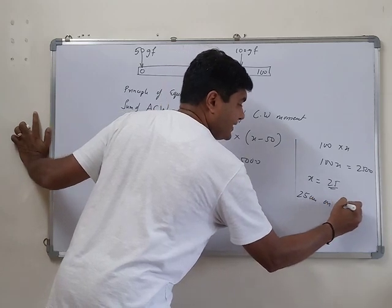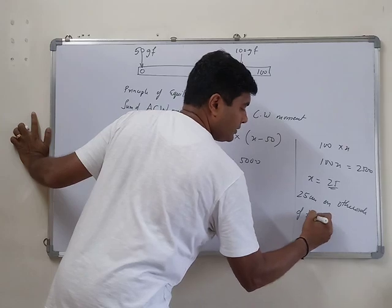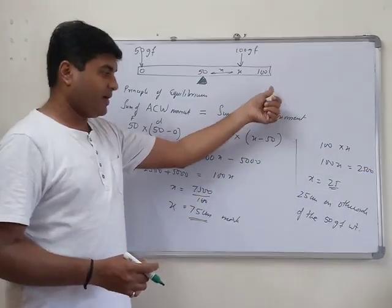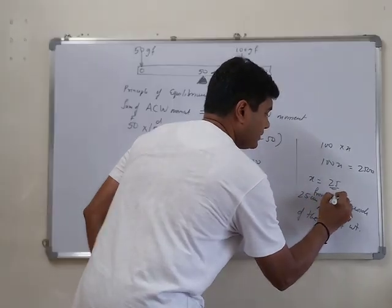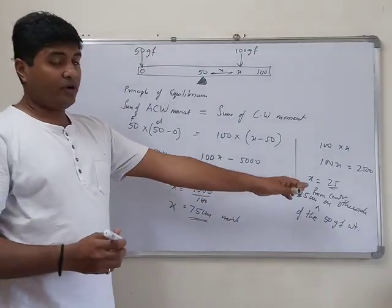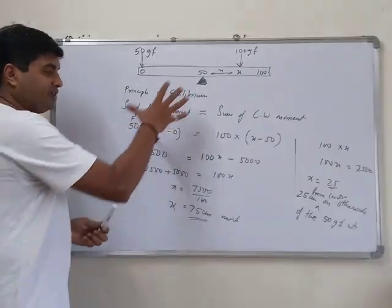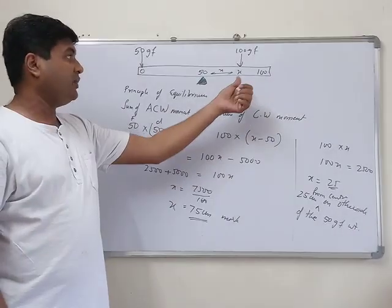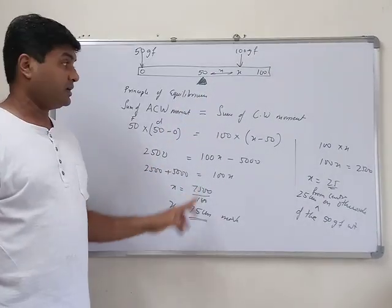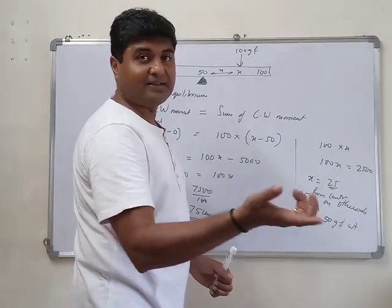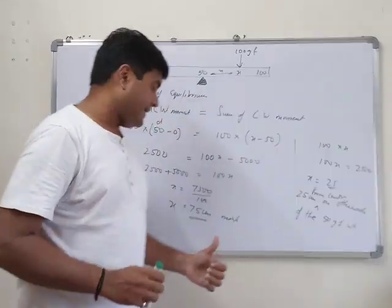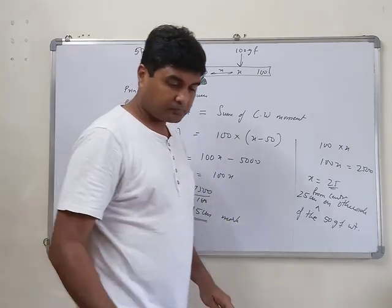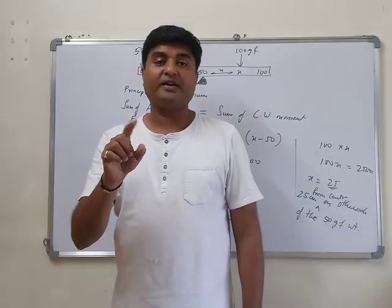So 100 gf is 25 centimeters from the center, on the side opposite to the 50 gf weight. Both answers are correct depending on how x is defined — as a mark on the rule (75 cm) or as a distance from the pivot (25 cm). The textbook gives 25 centimeters from center.